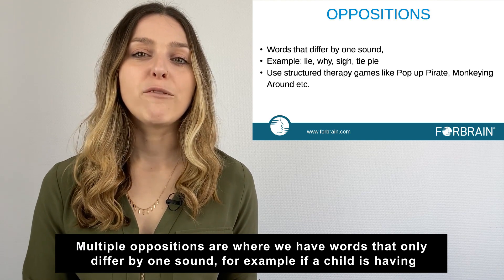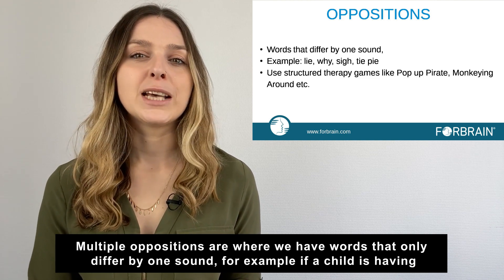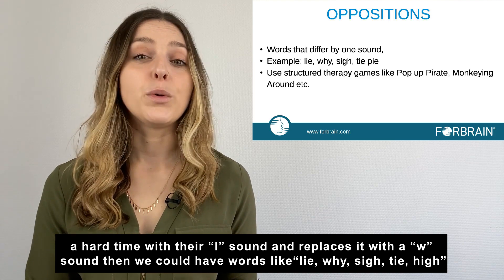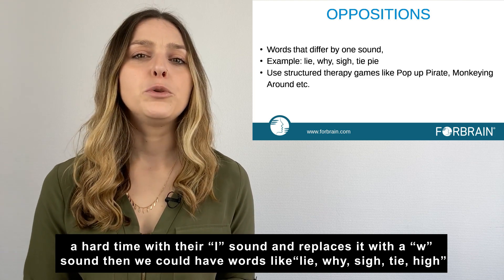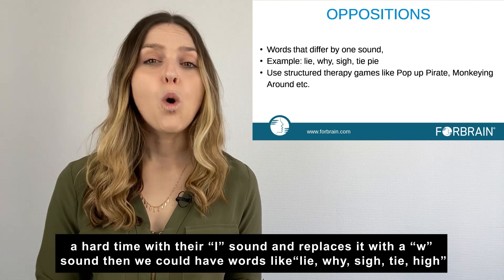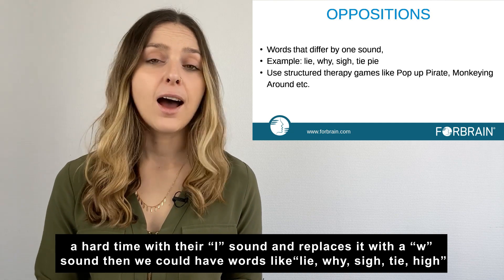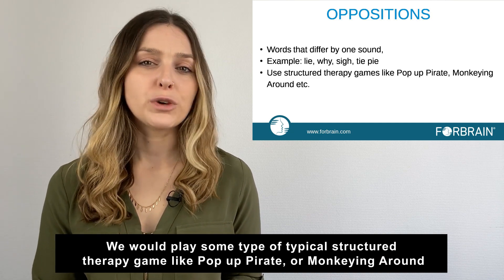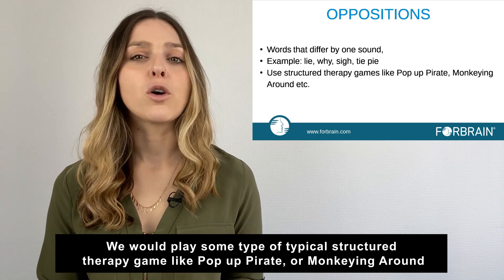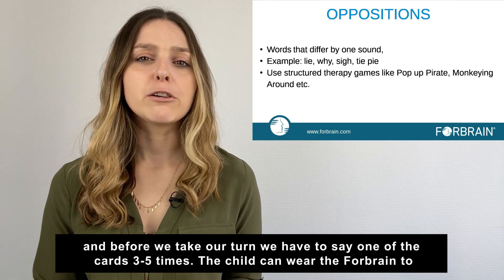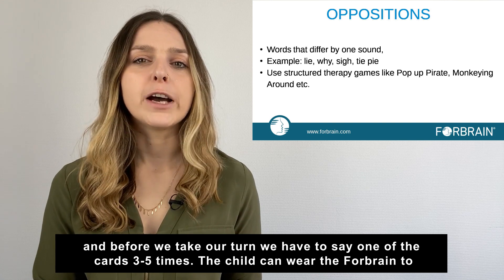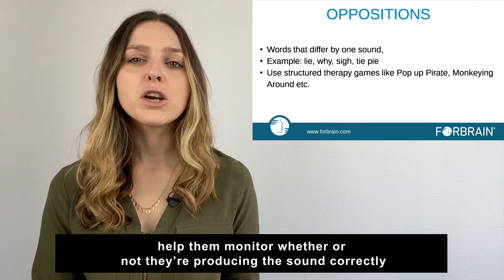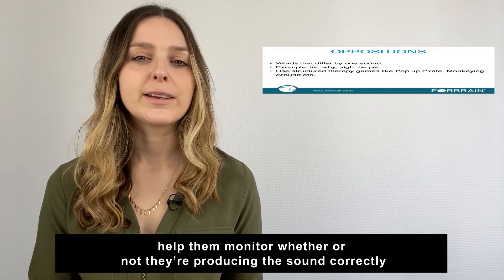Multiple oppositions are where we have words that only differ by one sound. For example, if a child is having a hard time with their L and replaces it with a W sound, then we would include words like 'lie,' 'why,' 'sigh,' 'tie,' and 'high.' We would play some type of typical structured therapy game like Pop-Up Pirate or Monkeying Around, and before taking a turn the child has to say one of the cards three to five times. The child can wear the Forebrain to help them monitor whether or not they are producing the sound correctly.